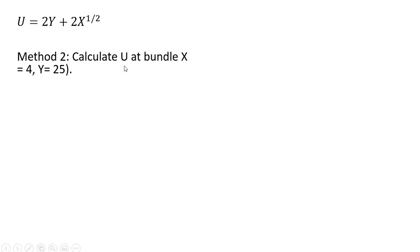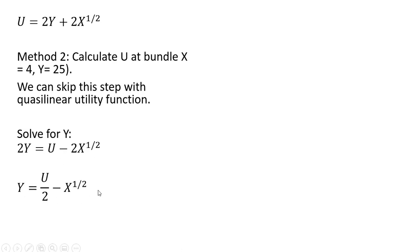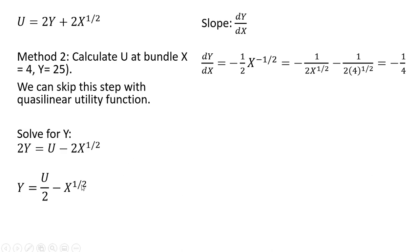Method two: calculate u at the bundle x equals 4 and y equals 25. The good news is with a quasi-linear utility function, we don't actually have to do that — we can skip this step. So let's just solve this equation for y. Dividing through by 2, we get our y equation. Now we get the slope by taking the derivative with respect to x — bringing the one-half down in front gives us minus one-half, then subtracting 1 from the x exponent and moving x to the minus one-half into the denominator. Evaluating x at 4, we get the same answer as method one. The slope is minus one-fourth.